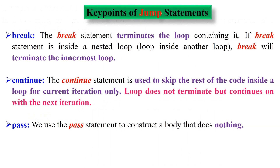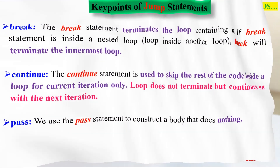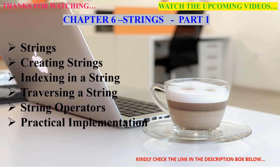Let's recall the key points of jump statements. The break statement terminates the loop containing it; if inside a nested loop, it terminates the innermost loop. The continue statement is used to skip the rest of the code inside a loop for the current iteration only — the loop does not terminate but continues with the next iteration. The pass statement is used to construct a body that does nothing. Thanks for watching. The next video covers Chapter 6: Strings Part 1 — creating strings, indexing in a string, traversing a string, string operators and practical implementation.